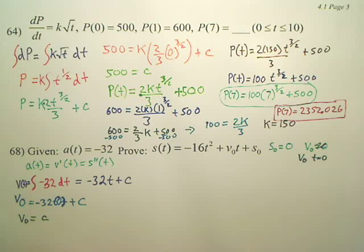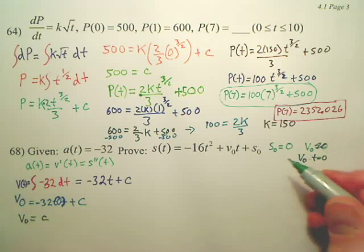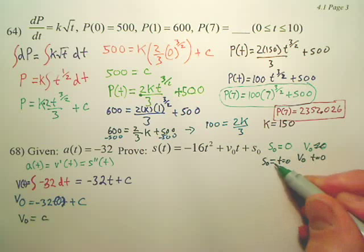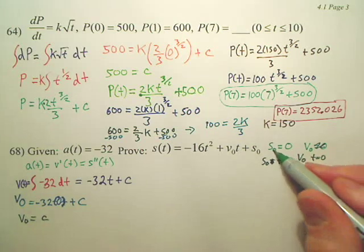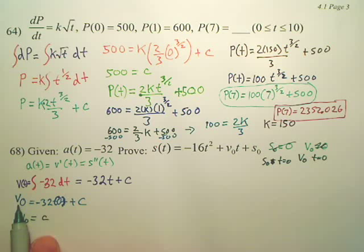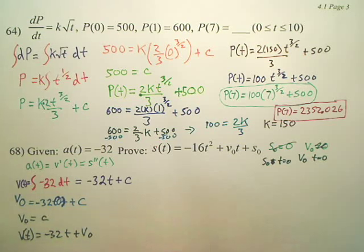At v of 0, t is 0. Is that okay? At s of 0, do you understand that t is 0? So, going back to this, at v of 0, my time is 0. So, I got c equals v of 0. So, anyways, what this is all saying is v of t is now equal to negative 32t plus v of 0.